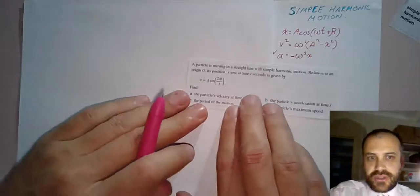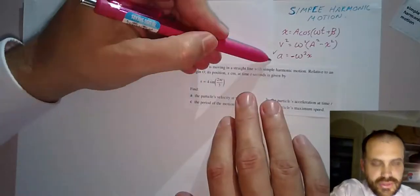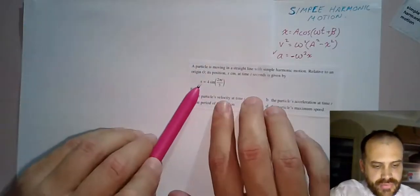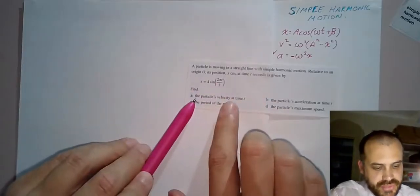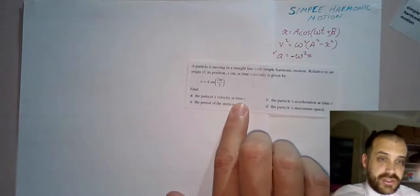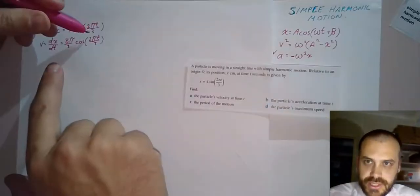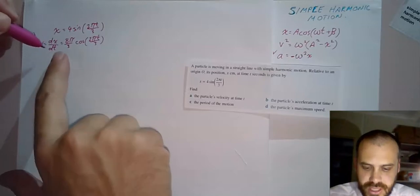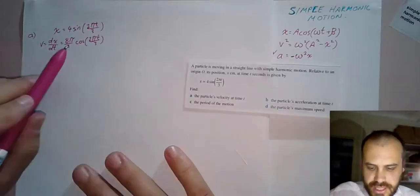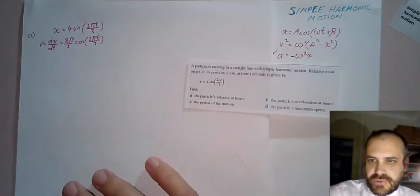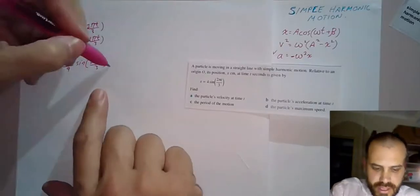Now I feel the need to show you how to do this question super fast, because you already know how to do this and it doesn't use these formulas at all. You're given a displacement function in terms of time. To find the particle's velocity at time t, just find the derivative. The derivative of x gives you velocity, and we're done. For acceleration, find the derivative of that.